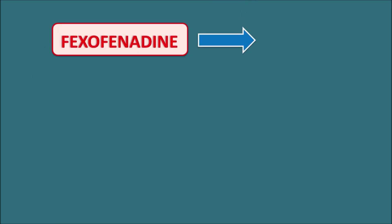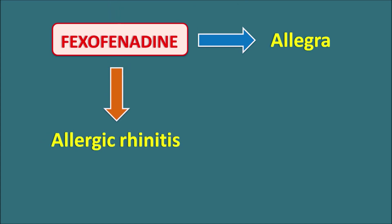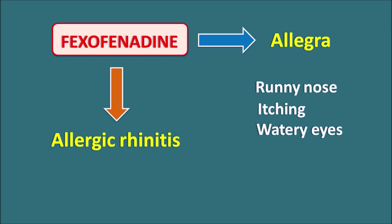Fexofenadine is one of the drugs which is well known by its brand name Allegra. This drug is an anti-histamine and it can be used in the treatment of allergic rhinitis. Allergic rhinitis is also called hay fever, and this condition can produce symptoms like runny nose, itching, watery eyes, sneezing and congestion, which results in difficulty in breathing. All these are observed because of the allergic reactions in the patients.